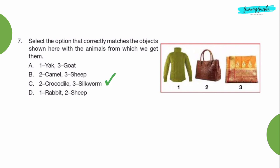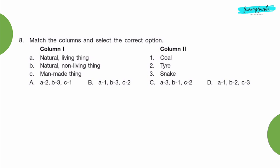Option C. We get leather bag from crocodile and silk saree from silkworm. Question 8: Match the columns and select the correct option. Option C.